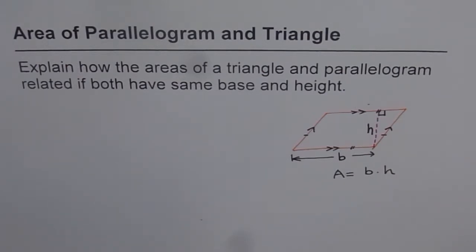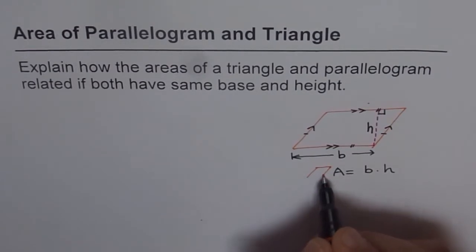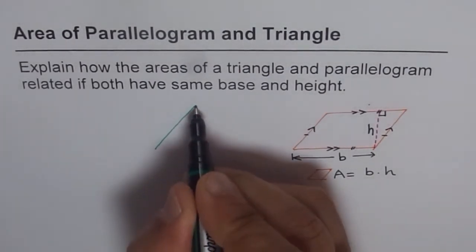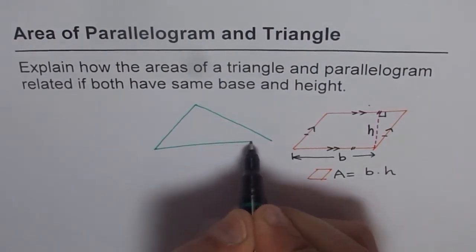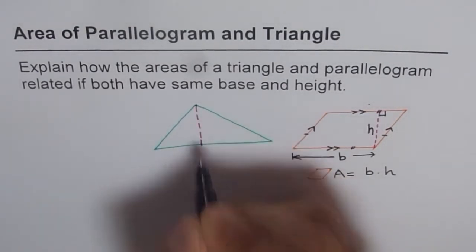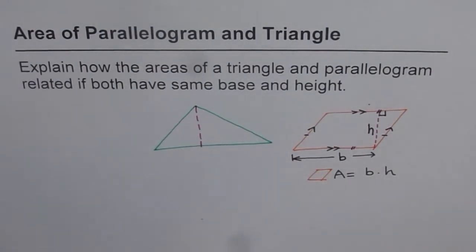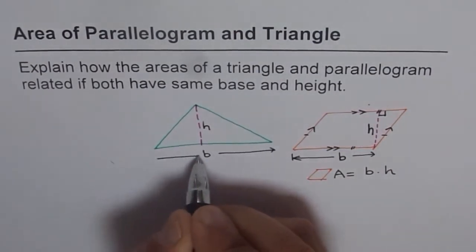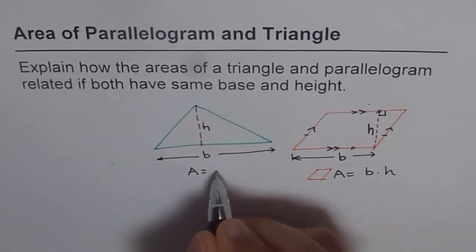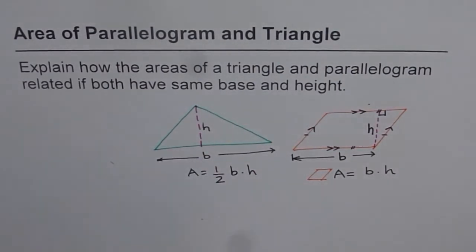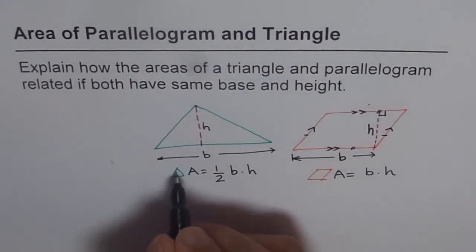Now how about a triangle? For a triangle — let me draw any triangle of any kind in general. In a triangle, the area is half base times height. If this triangle has a base b and height h, then area of the triangle is half of base times height.